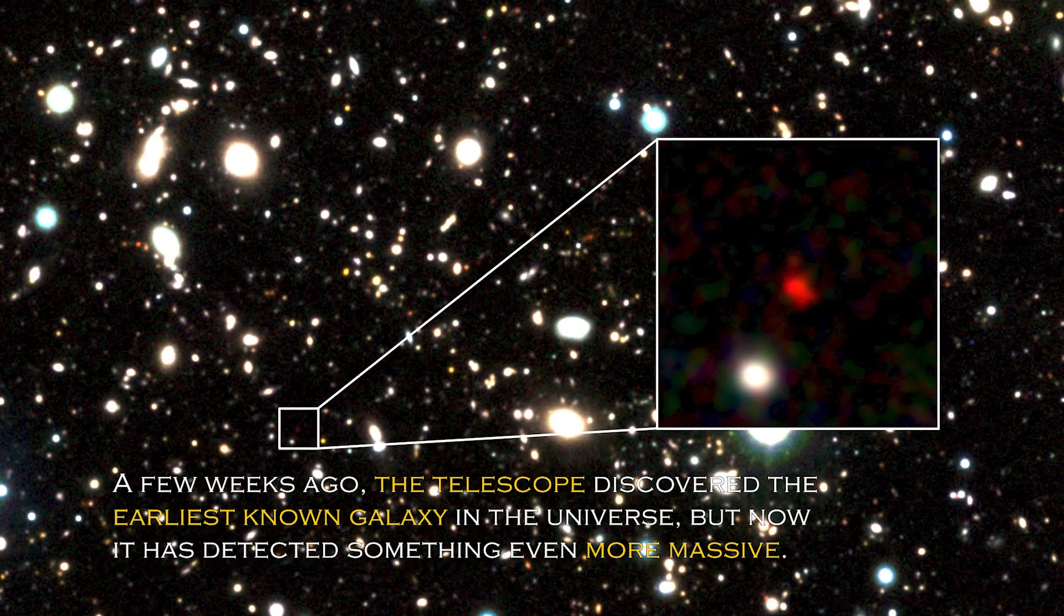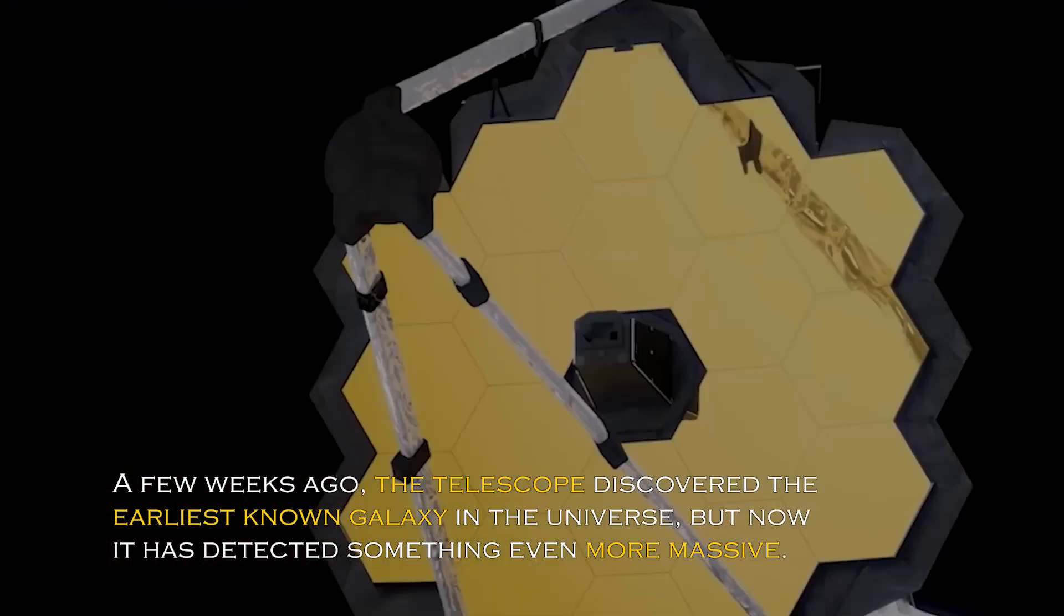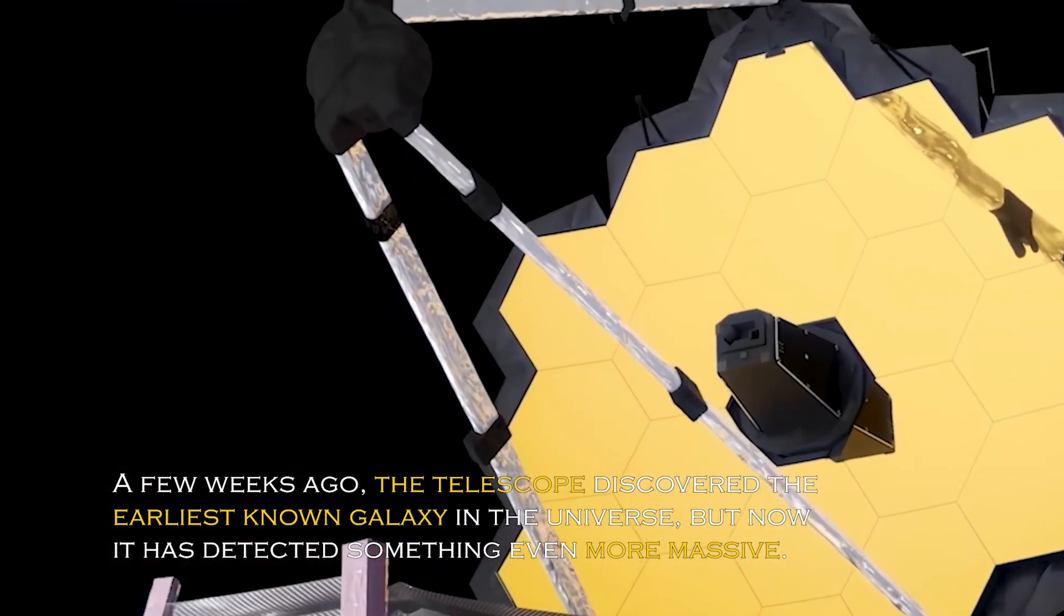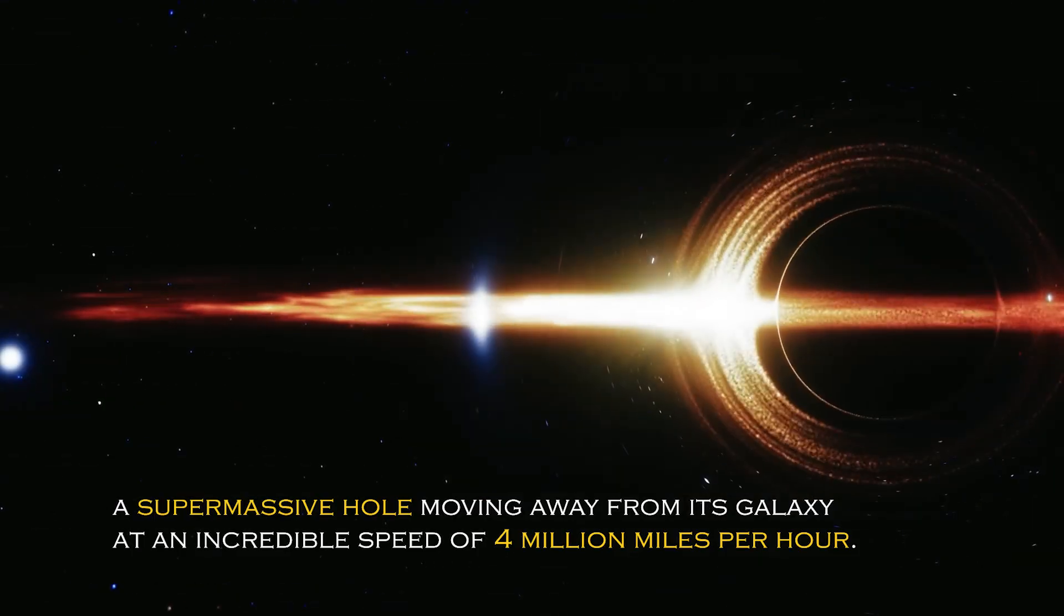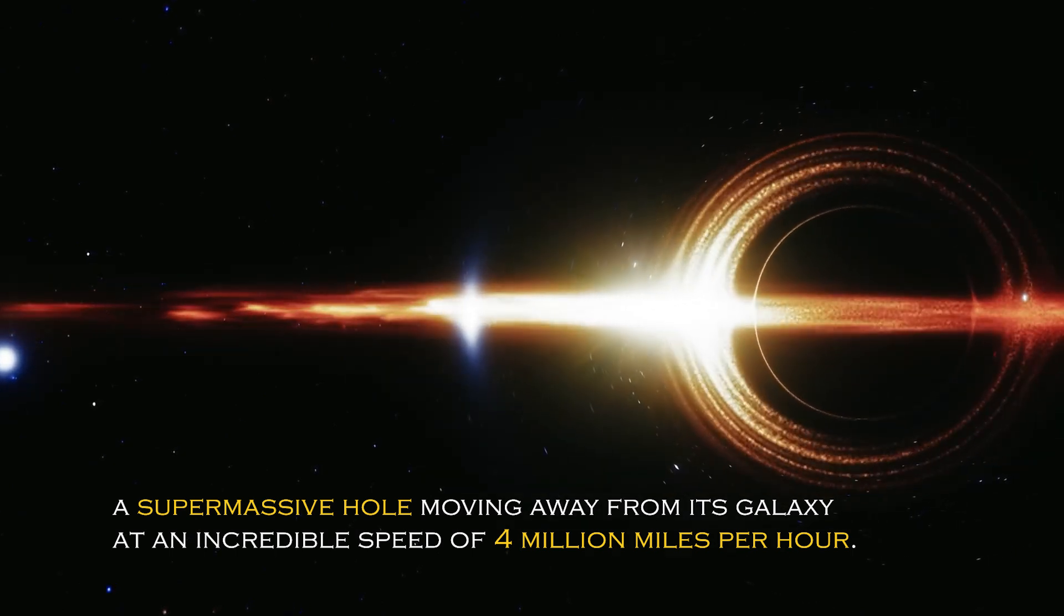A few weeks ago, the telescope discovered the earliest known galaxy in the universe, but now it has detected something even more massive – a supermassive black hole moving away from its galaxy at an incredible speed of 4 million miles per hour.